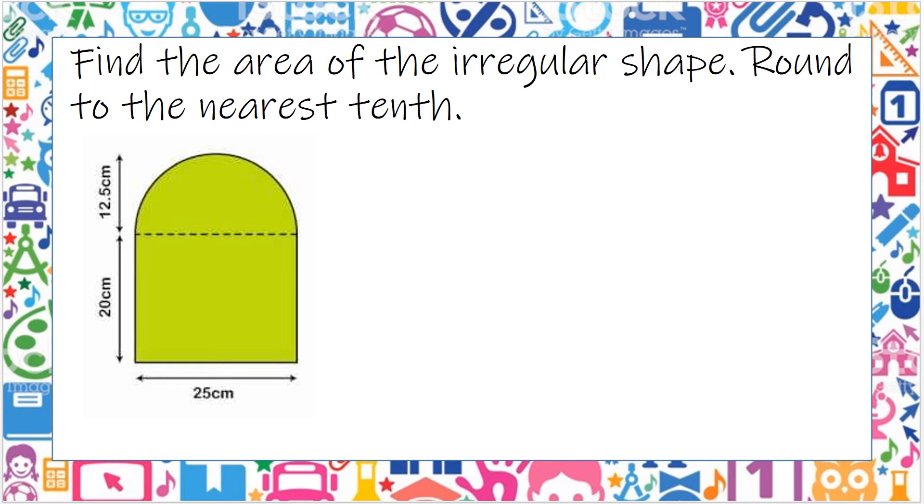Okay, find the area of the irregular shape below. Round to the nearest tenth. So I see half of a circle up here, and it shows me the radius here. So I'm going to plug that in. I've got area equals pi r squared.